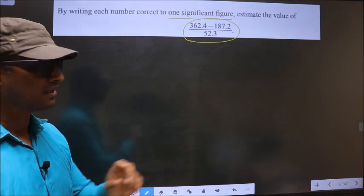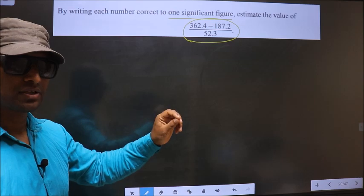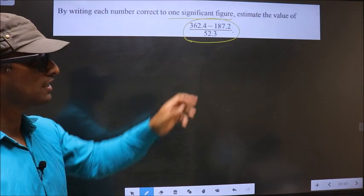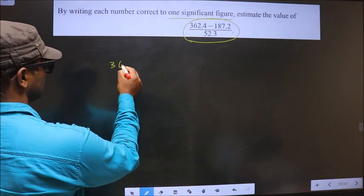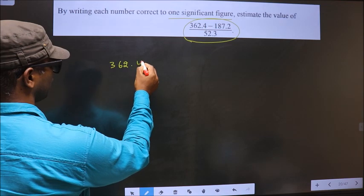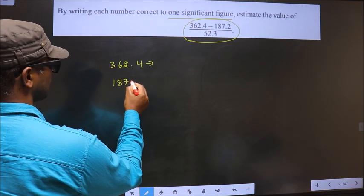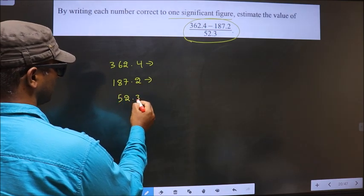Step 1. Whatever numbers are present here, we should round them to one significant figure. So first, the numbers present here are 362.4 and 187.2, 52.3.